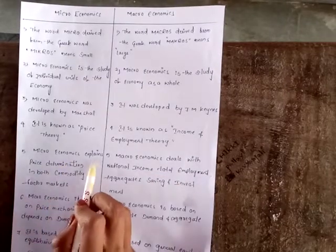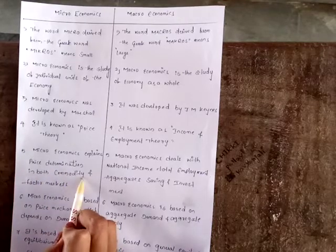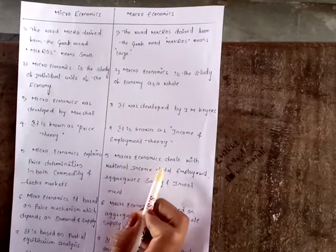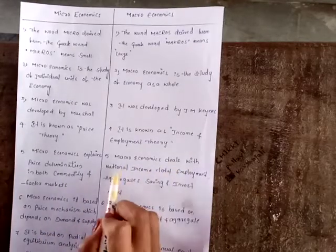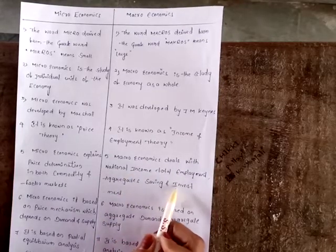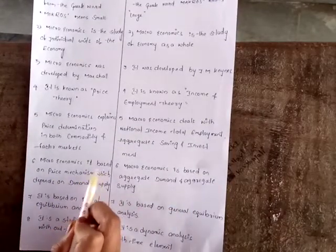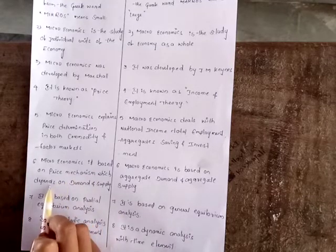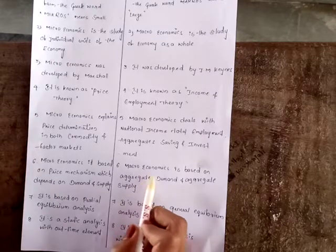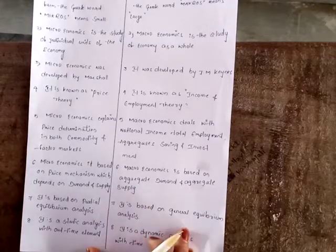Microeconomics explains price determination in both commodity and factor markets. Macroeconomics deals with national income, total employment, aggregate savings, and investments. Microeconomics is based on price mechanism, which depends on demand and supply. Macroeconomics is based on aggregate demand and aggregate supply.